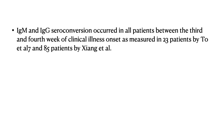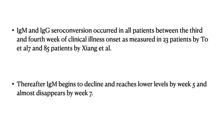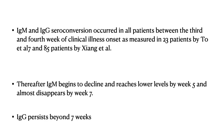IgM and IgG seroconversion occurs in all patients between the 3rd and 4th week of clinical illness, as proved in studies by Toh and Jiang et al. which included almost 100 patients. Following this increase, IgM starts declining and reaches lower levels by week 5, almost disappearing by week 7. IgG persists beyond 7 weeks and may provide long-term immunity to the virus, though this remains to be seen.